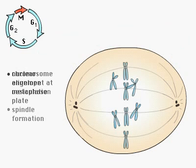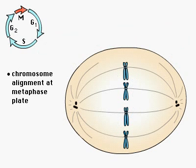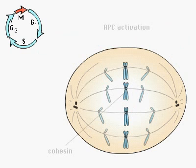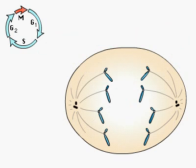Next, the anaphase promoting complex, or APC, is activated. The APC targets cohesin regulators for degradation, allowing segregation of sister chromatids.